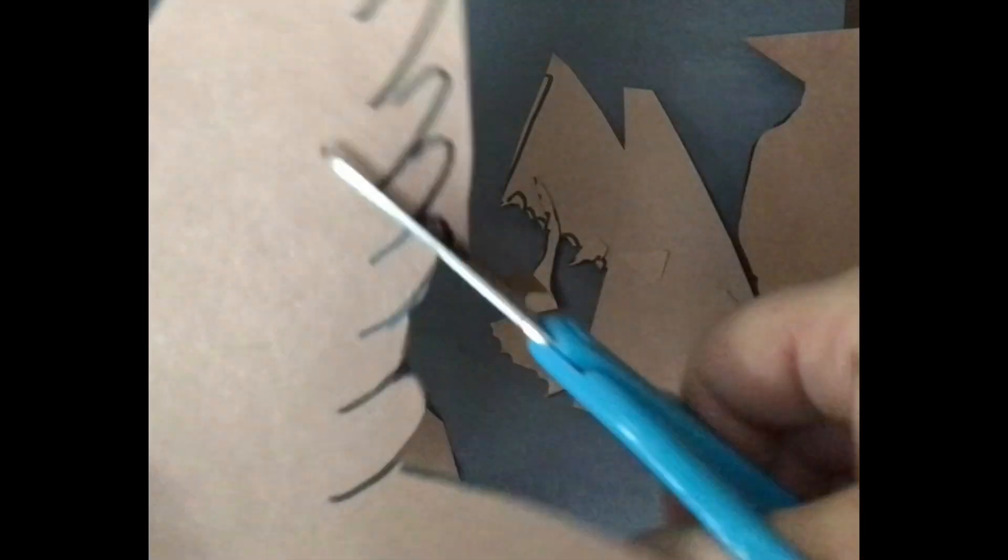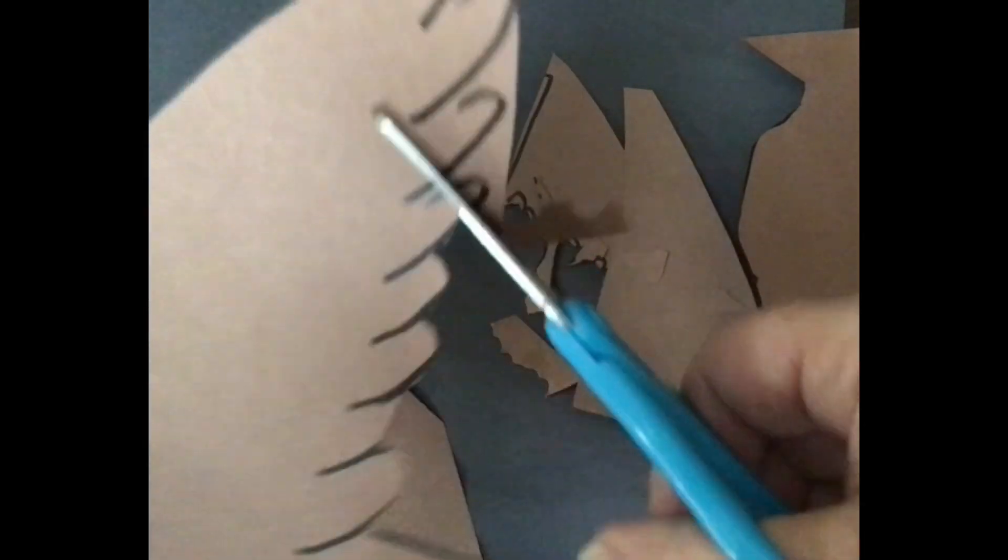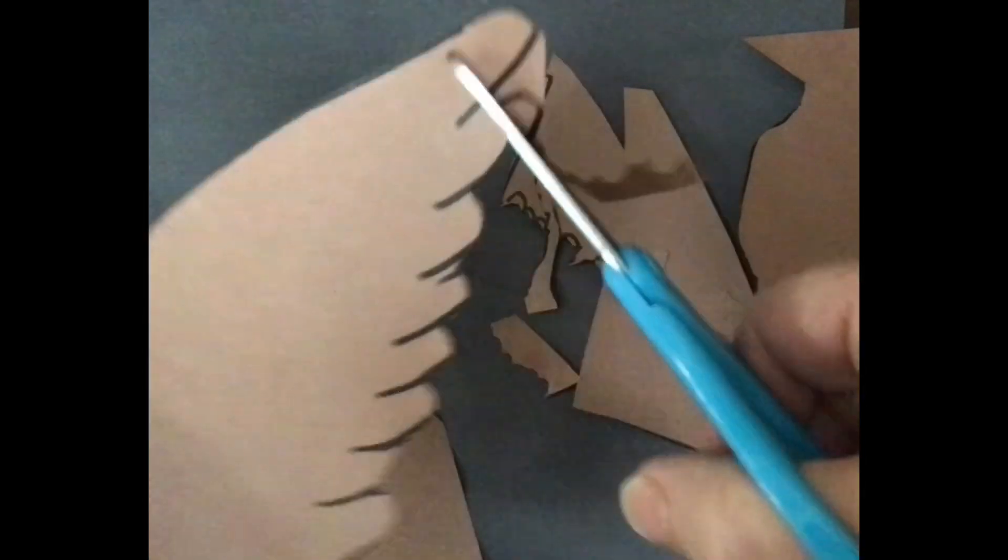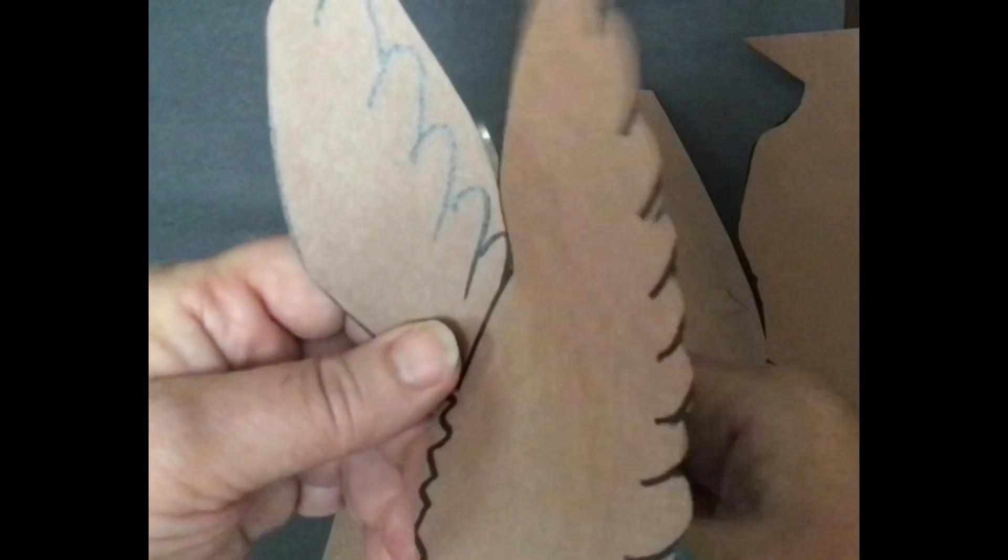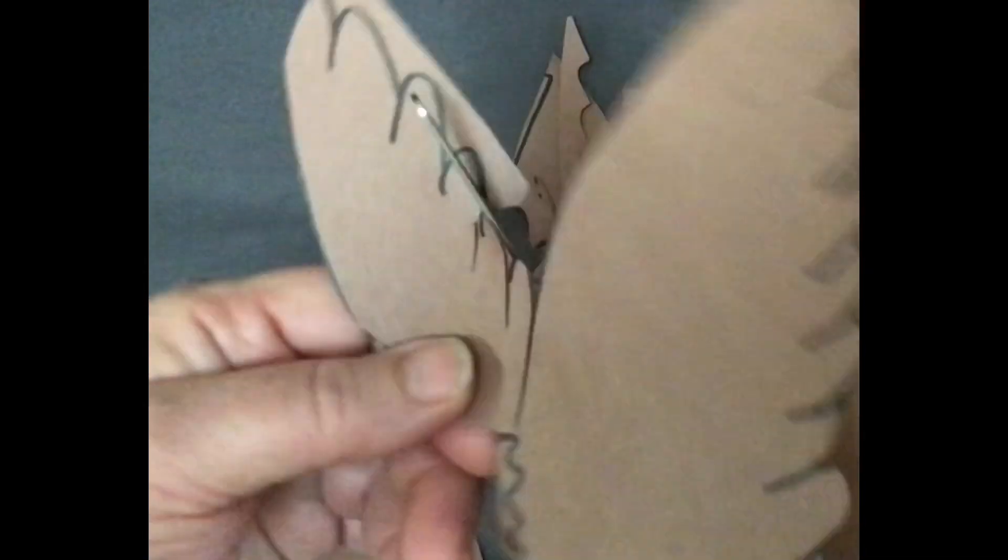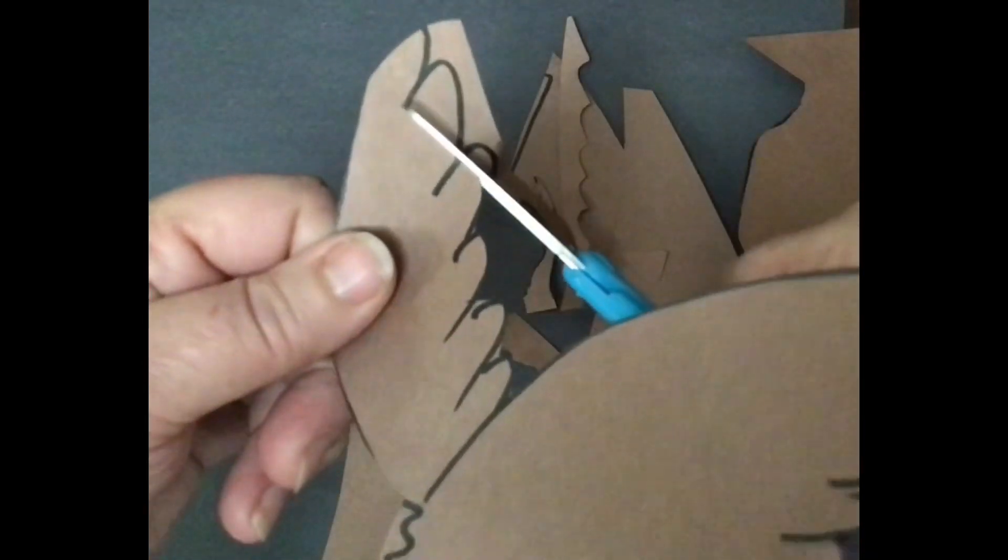So I'm going to go around. This is a great way to practice cutting different ways—large areas and small areas. Just have some fun with this. We're making an eagle and the eagle has feathers on their wings.